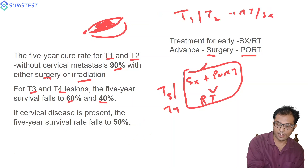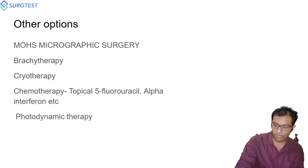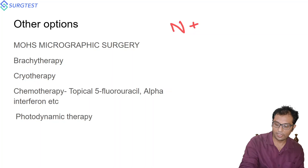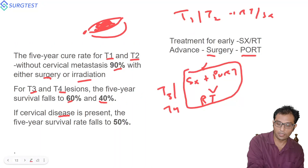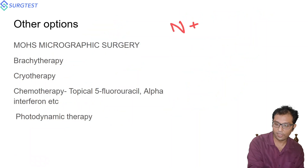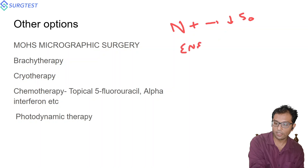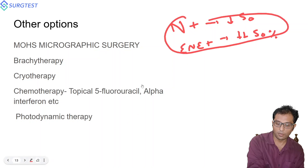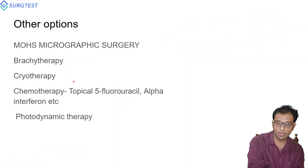A general rule in head and neck: if N-positivity occurs — that is, if cervical nodal disease is present — the survival drops by 50 percent. If in addition there is extranodal extension present, the survival drops further by 50 percent. This general rule applies across all subsites of head and neck.